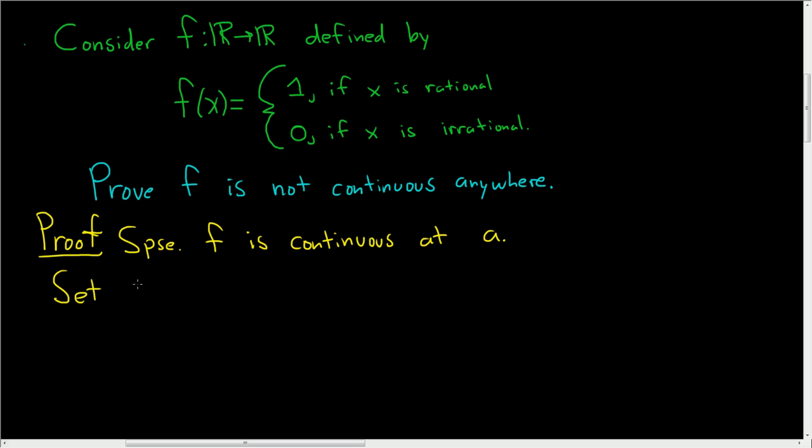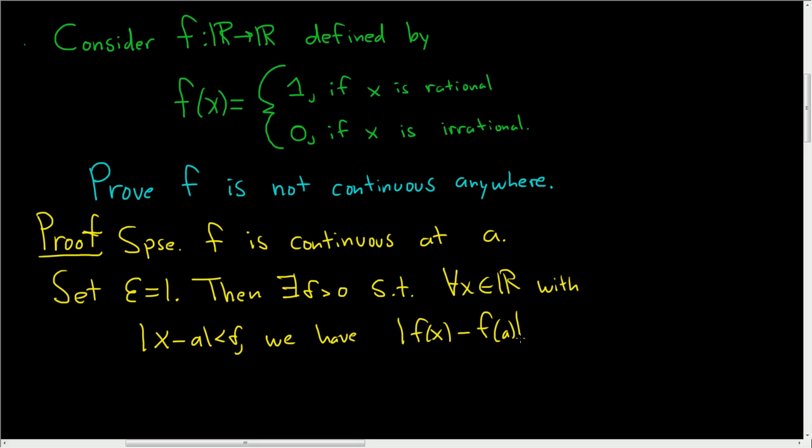Set epsilon equal to 1. Then because f is continuous at a, that means there exists a delta greater than 0, such that for every real number x with the absolute value of x minus a less than delta, we have the absolute value of f(x) minus f(a) less than 1. Because epsilon is our 1. So all we've done is we've used the definition of continuity with epsilon equal to 1.